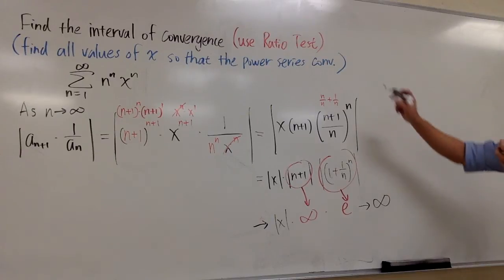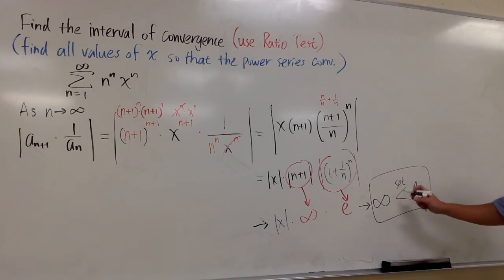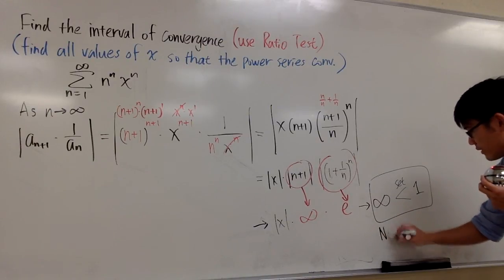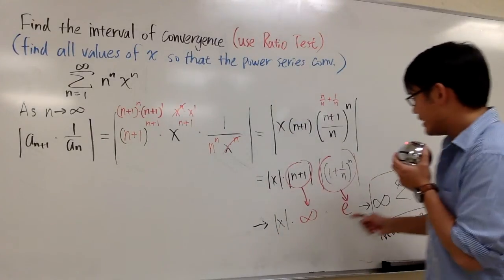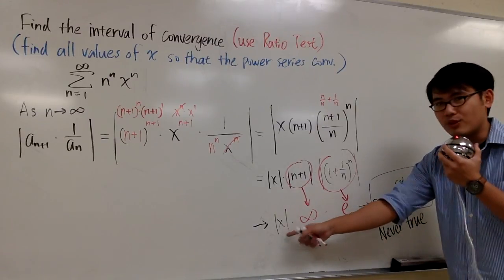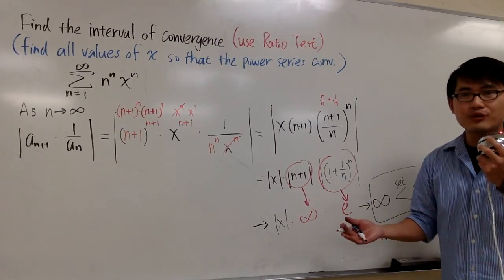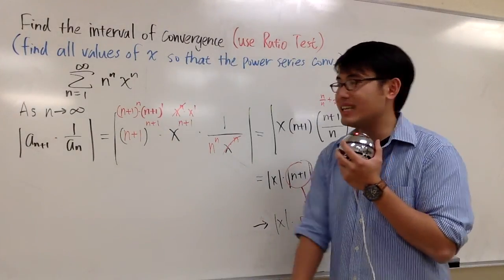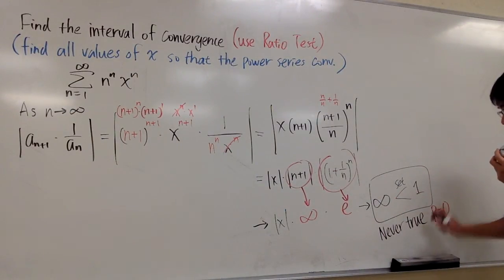This is the limit we get. For the ratio test, we have to set this to be less than 1. But the inequality 'infinity is less than 1' is never true. It doesn't matter what x is — whether you pick 7 or 20 or anything else, you will always end up with infinity. Because this inequality is never true, the radius of convergence will be 0.